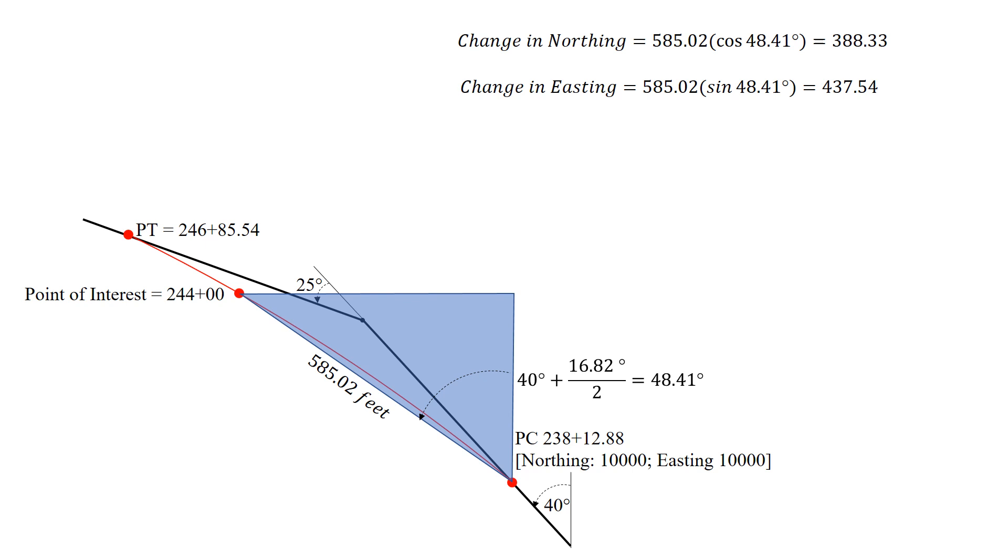And it's important to recognize the convention. So for northings, north is always positive, south is negative. For eastings, east is positive, west is negative. So in this case, we move to the north and to the west. So the north component is going to be positive, and the west component is going to be negative.